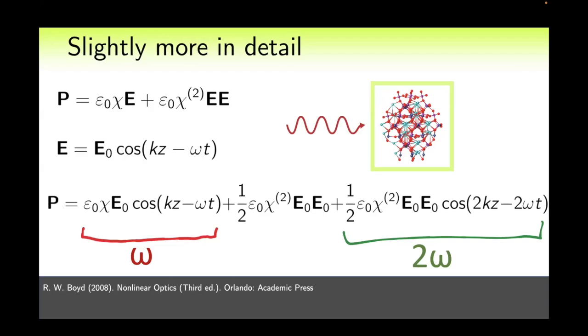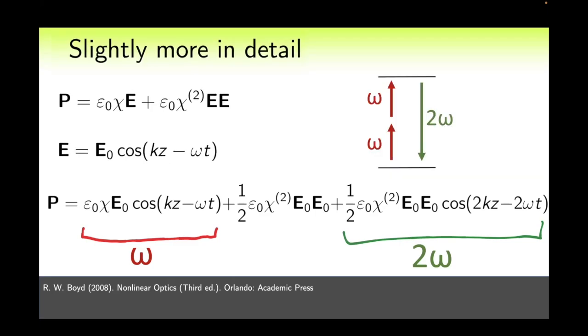Let us say our wave hits some crystal then the first term corresponds to the wave passing through the crystal. We can also draw an energy diagram that describes how two photons with frequency omega turn into one with frequency 2 omega.